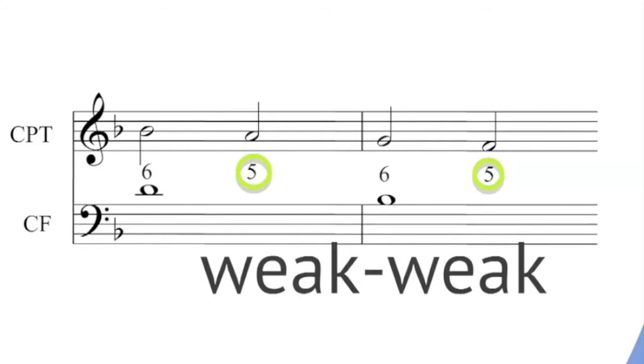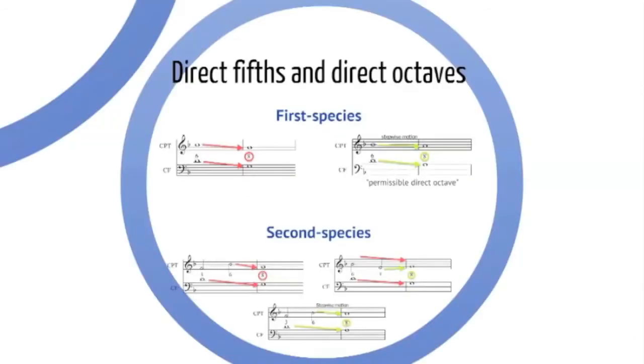So as you might suspect if you have two consecutive octaves or fifths on weak beats that's perfectly permissible. And in fact having this consonant stepwise motion is 6565 is very nice though you don't want to have too many of those in a row.